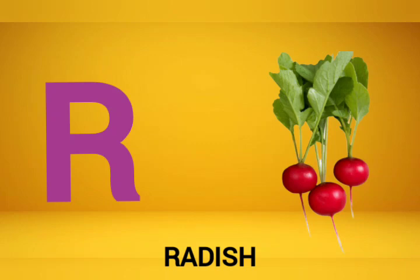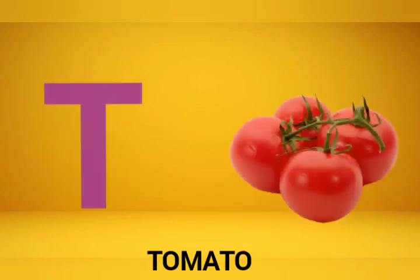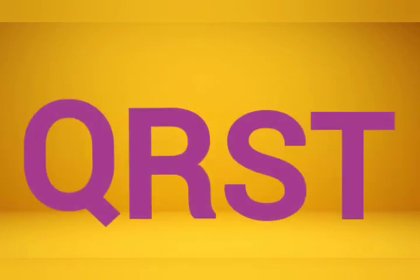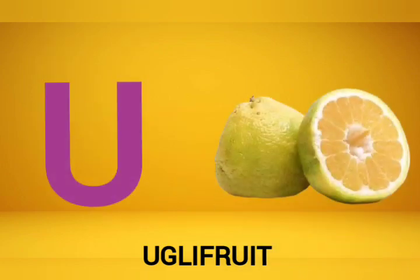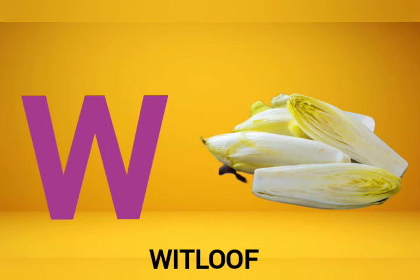R is for radish, R, radish. S is for sweet corn, S, sweet corn. T is for tomato, T, tomato. U is for ugly fruit, U, ugly fruit. V is for vegetables, V, vegetables.